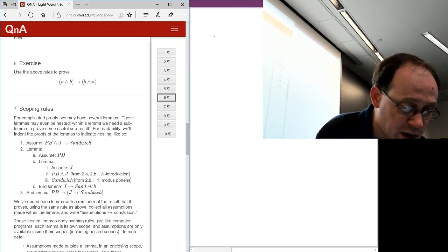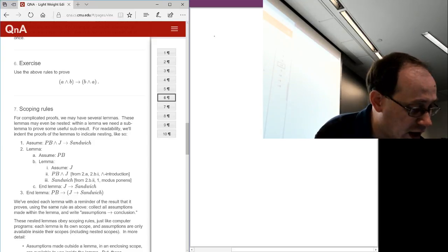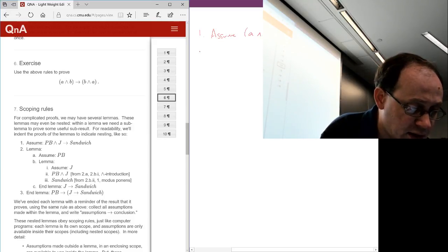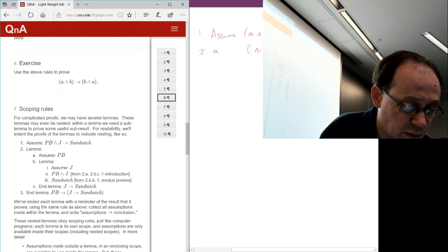So we're going to start in the proof by assuming the left-hand side of the implication. So our first step will be to assume A and B. Then by and-elimination from A and B, we can conclude A. So we'll conclude A by and-elimination, where the premise is 1. We can also conclude B by and-elimination, where the premise is again 1.